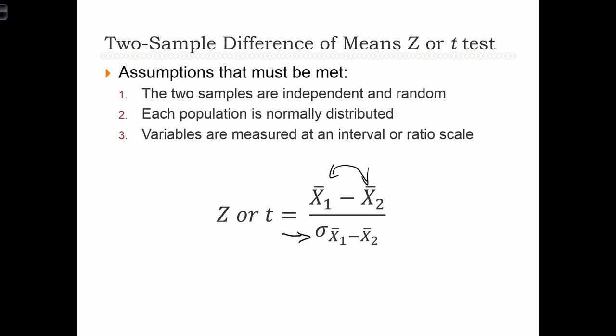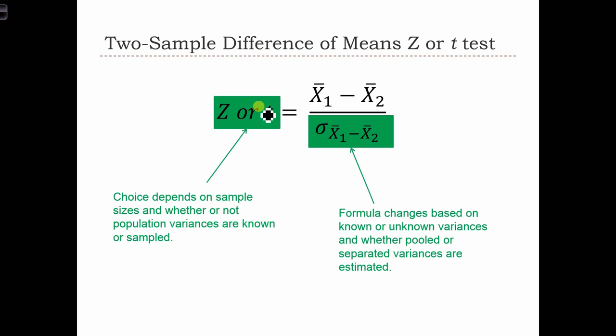The z or t-statistic depends on whether or not the sample sizes are large or small. So the choice of z or t depends on the sample sizes, but it also depends on whether or not the population variances are known or sampled. Are we going to use known sigmas, or are we going to have standard deviations for each sample? The sample standard deviations or the population standard deviations.